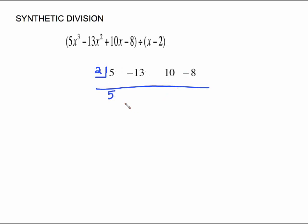The rest of the problem is just a matter of multiplying and adding. 2 times 5 is 10, and where you're going to put that is underneath this blank right here. Add. Negative 13 plus 10 is negative 3. Go back to the 2, multiply again. 2 times negative 3 is negative 6. Add. Get 4. Go back to the 2. 2 times 4 is 8. Add and get zero.